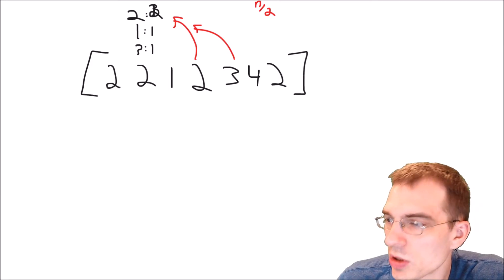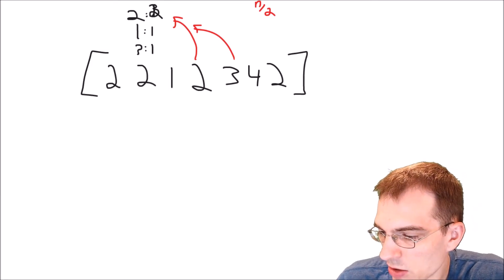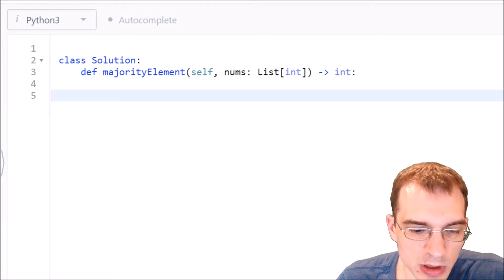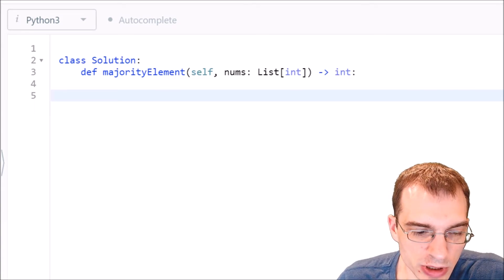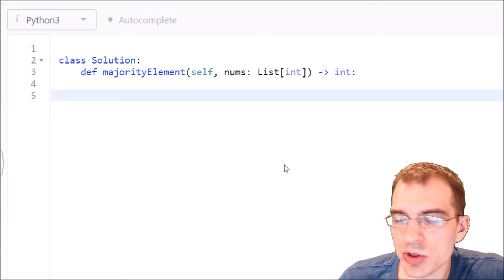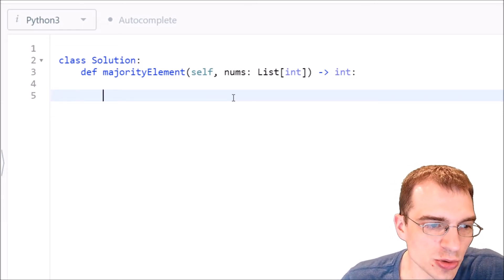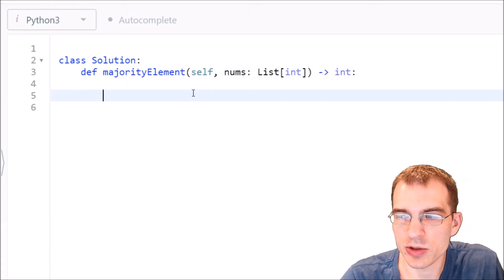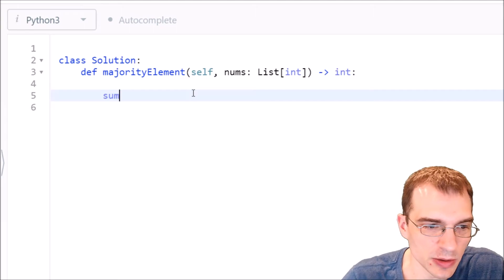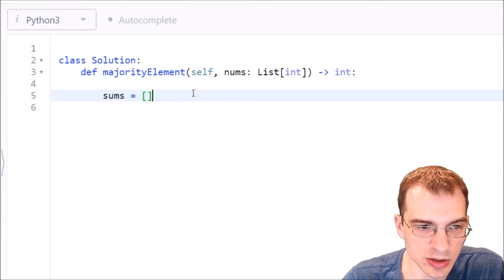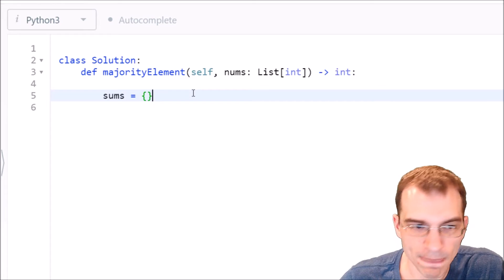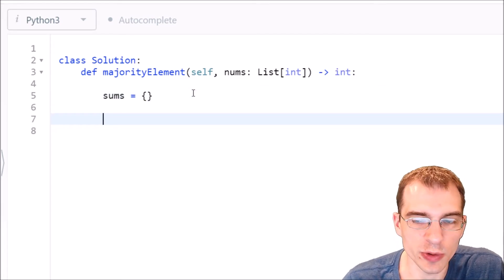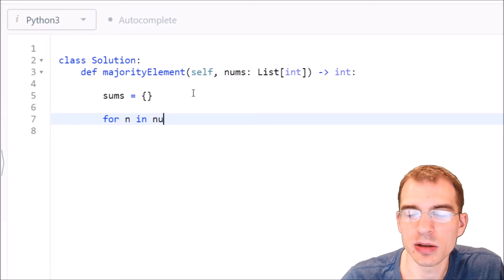So let's jump back into the code editor and see how we could code up this solution. So basically what we're trying to do here is create a dictionary that loops through every element we're given. So we're given a list of nums. We're going to want to store the results in a dictionary. So we'll create an empty dictionary here and then we'll just loop over the nums. So for n in nums.